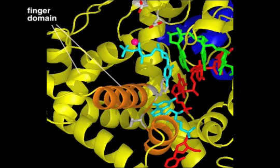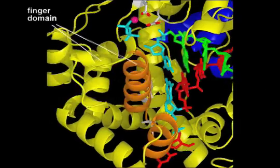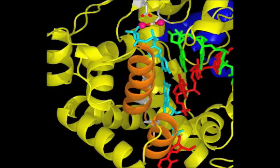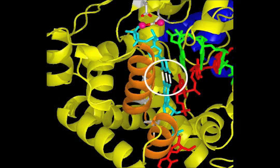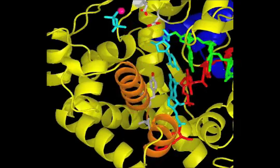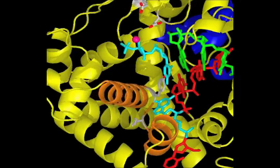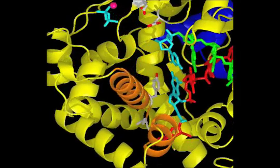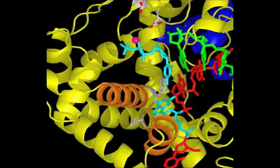When the finger domain moves inward, the nucleoside triphosphate is tested for its ability to form a proper base pair with the template nucleotide. When a base pair forms, the active site residues catalyze the covalent addition of the new nucleotide onto the 3' hydroxyl group on the growing strand, and the entire process repeats at speeds up to 500 nucleotides per second.